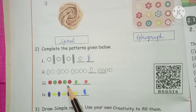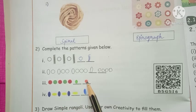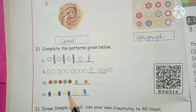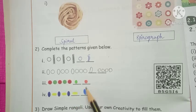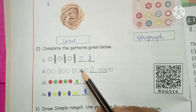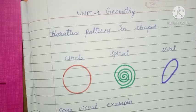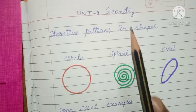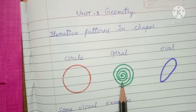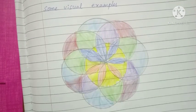Colors only differ here: red, green, red, green, red, green — then blue, yellow, blue, yellow, blue, yellow, blue. Two colors and patterns are used. Write in your classwork book. This is Term 3, Unit 1 Geometry — iterative patterns in shapes. First: circle, spiral, oval. Visual examples include rangoli.